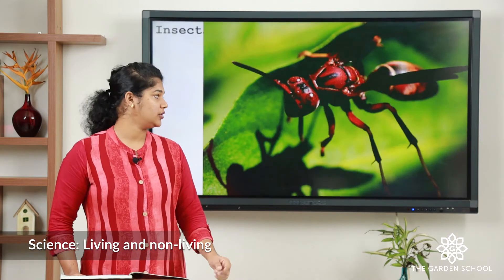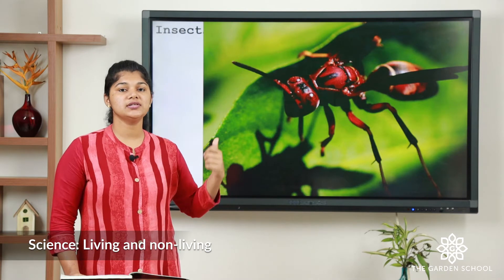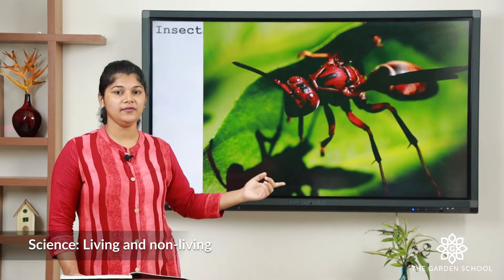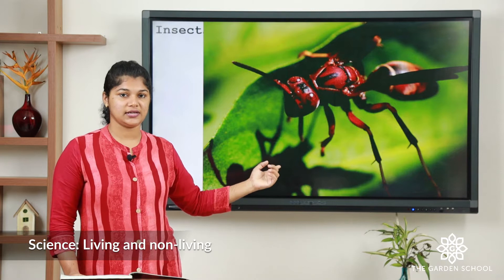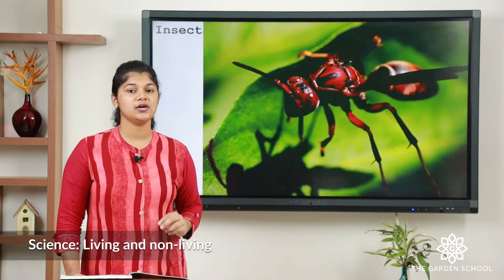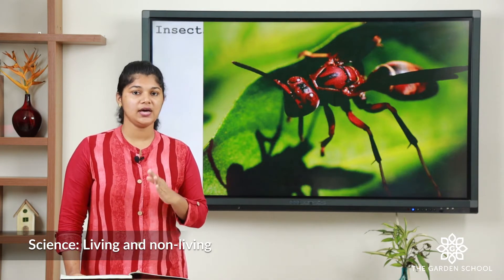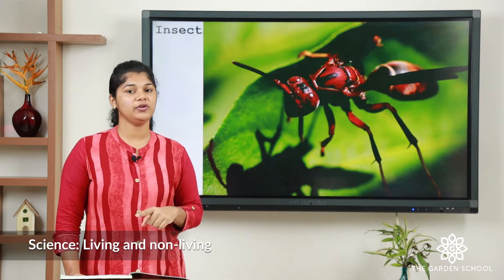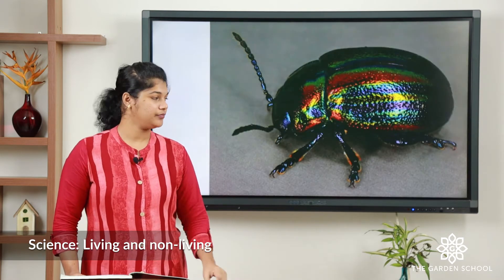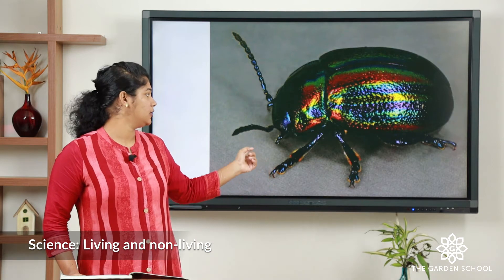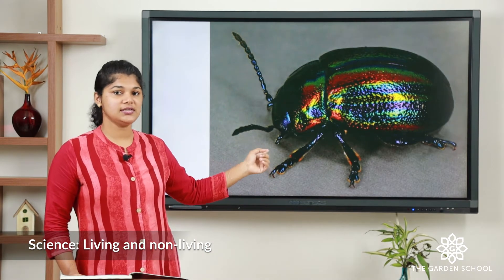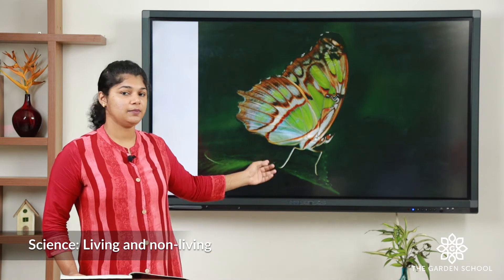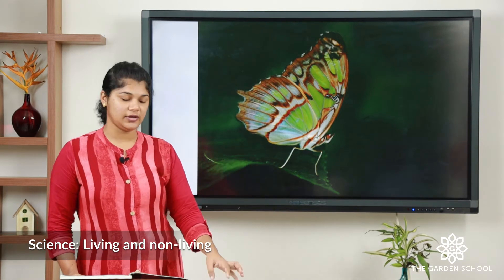Let's see about the insects and how they move. You can see in this picture the insects have six legs and two wings. With the help of the wings and the legs they move from one place to another. You can see the beetle here — it has six legs and two wings. The same applies for the butterfly.